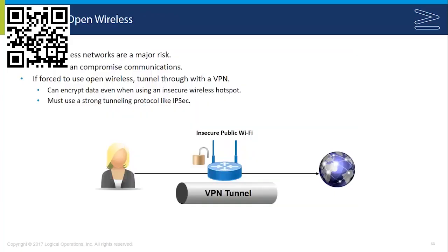One of the primary problems with wireless networks is open wireless networks. They are accessible to everybody and are very insecure. When users are on public Wi-Fi, they should never be typing in usernames and passwords. Attackers can compromise those communications very easily. If you are using open wireless, you should be tunneling through VPNs — provided they use secure tunneling protocols to encrypt data. Older protocols like PPTP are still not very secure, but strong protocols like IPsec would be considered secure.